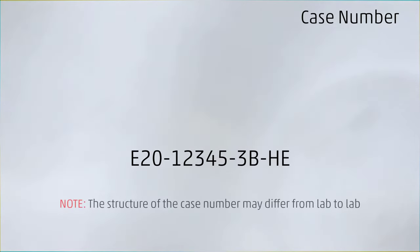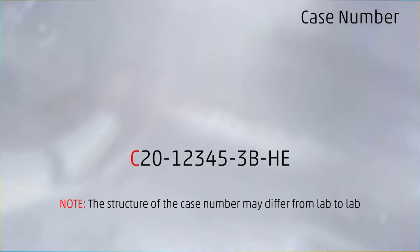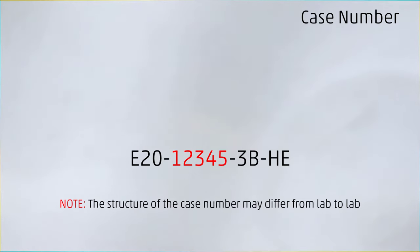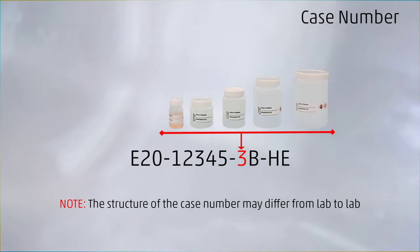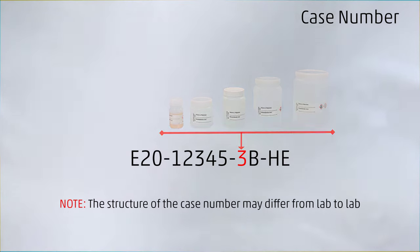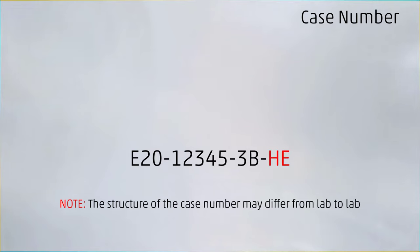On arrival, each case is assigned a running case number. The 'E' stands for entry, but it could also be a 'C' for cytology or an 'S' for a frozen section, followed by the year and running number which resets every year. The next number corresponds to the container the sample has been taken from, since a surgery can yield more than one sample and each one is packed into individual containers. If the sample from one container is split, each part is marked by a different letter. The last part indicates the staining used on the sample.